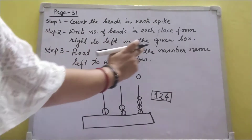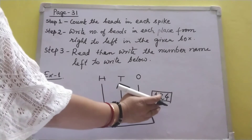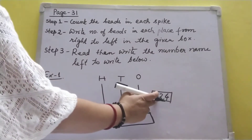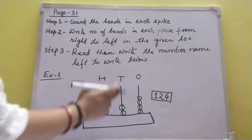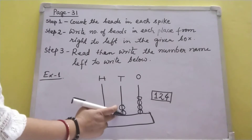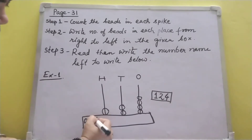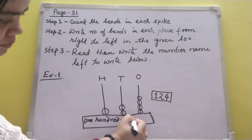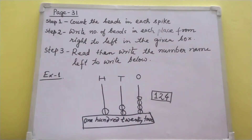Step three: read them, then write the number name from left to right. When we read a number we read from left to right. So I am reading one hundred twenty-four. Hundreds place: one hundred. Tens place: twenty. Ones place: four. So I write one hundred twenty-four.